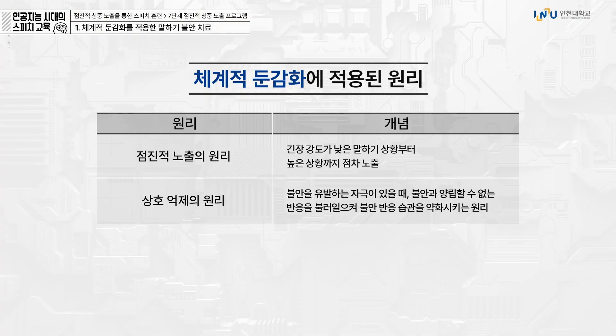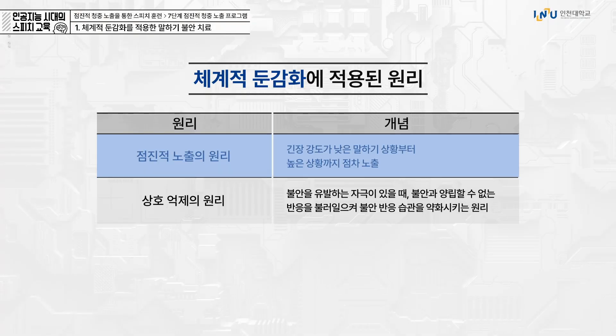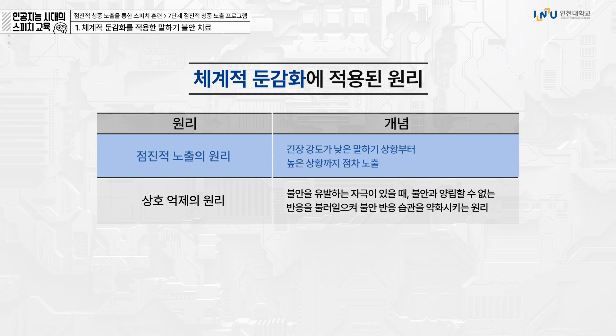다시 한번 정리해 드릴게요. 점진적 노출의 원리란 긴장 강도가 낮은 말하기 상황부터 높은 상황까지 점차 노출하는 겁니다. 상호 억제의 원리란 불안을 유발하는 자극이 있을 때 불안과 양립할 수 없는 반응을 불러일으킴으로써 불안 반응의 습관을 약화시키는 겁니다.